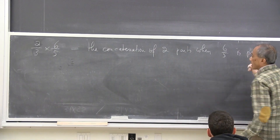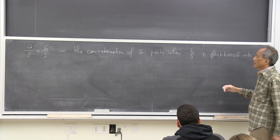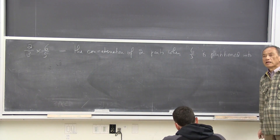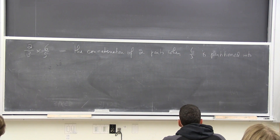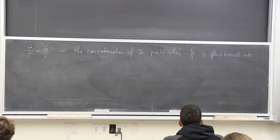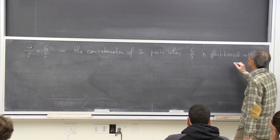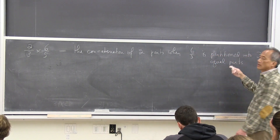When I say 'partitioned,' do I need to say 'evenly partitioned,' or can I just say 'partitioned'? I think I should say partitioned 6 fifths into 3 equal pieces — 3 equal parts. Yes, I always say equal parts.